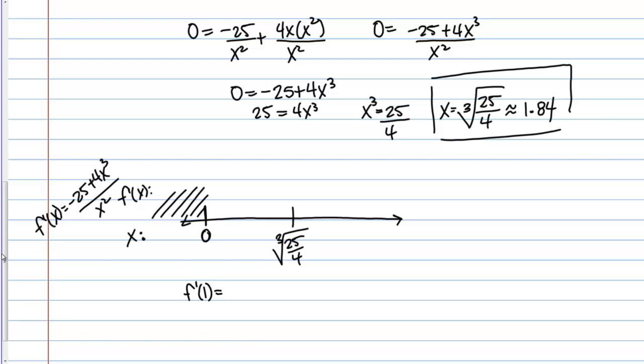So this derivative isn't quite as friendly as ones we've looked at in the past, so we're going to have to do a little more calculation. So I've got -25 + 4 times 1³. So -25 + 4, so that's still negative, right? So I'm negative here. And then over here, so 1.84. So I could pick f(2) and that would be greater, f'(2).